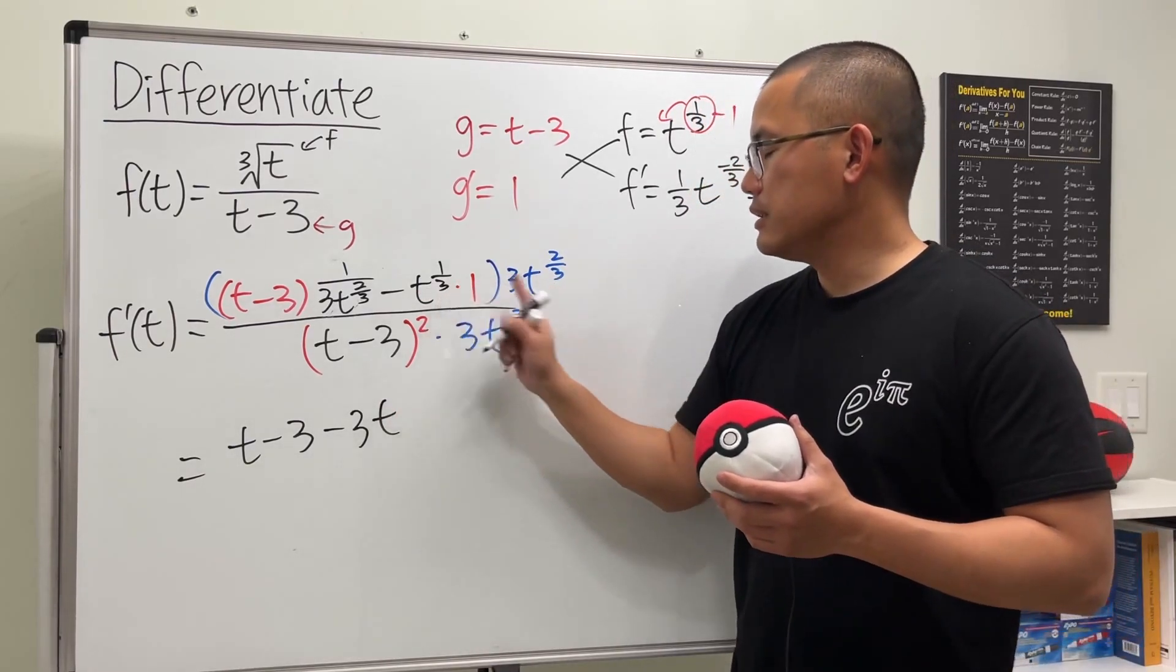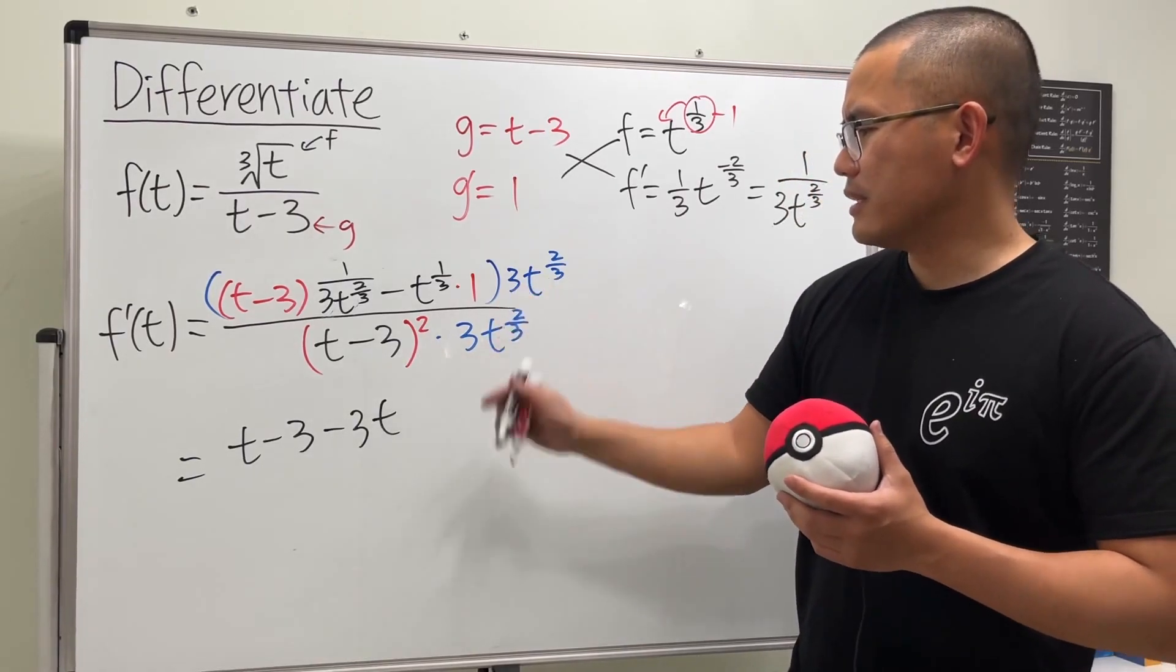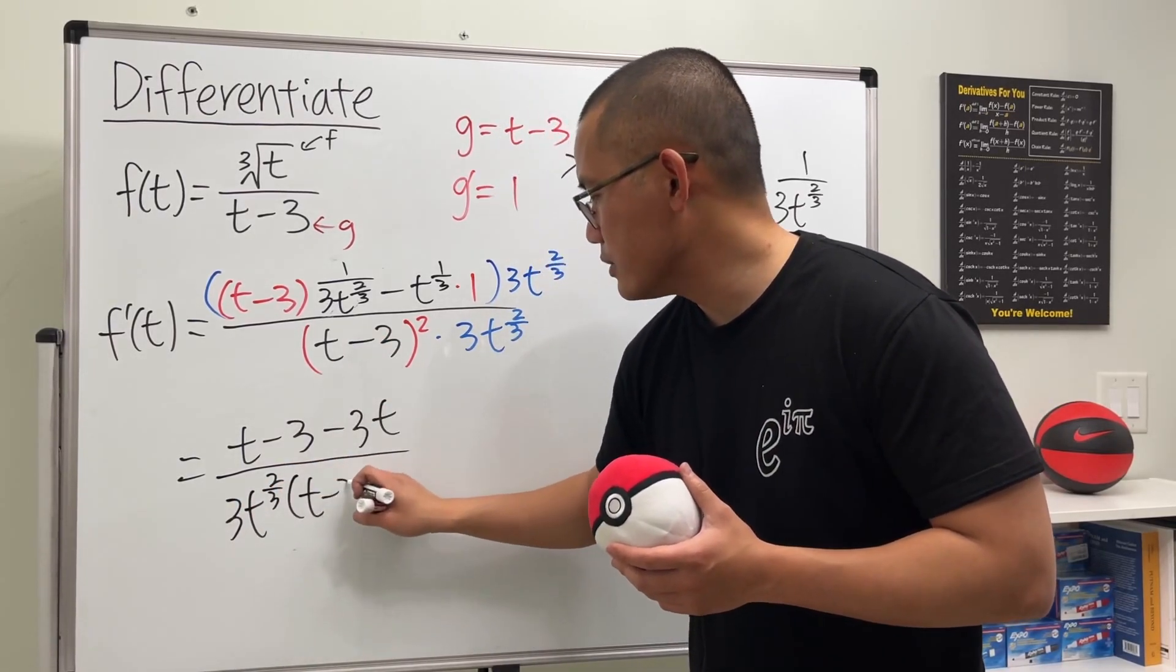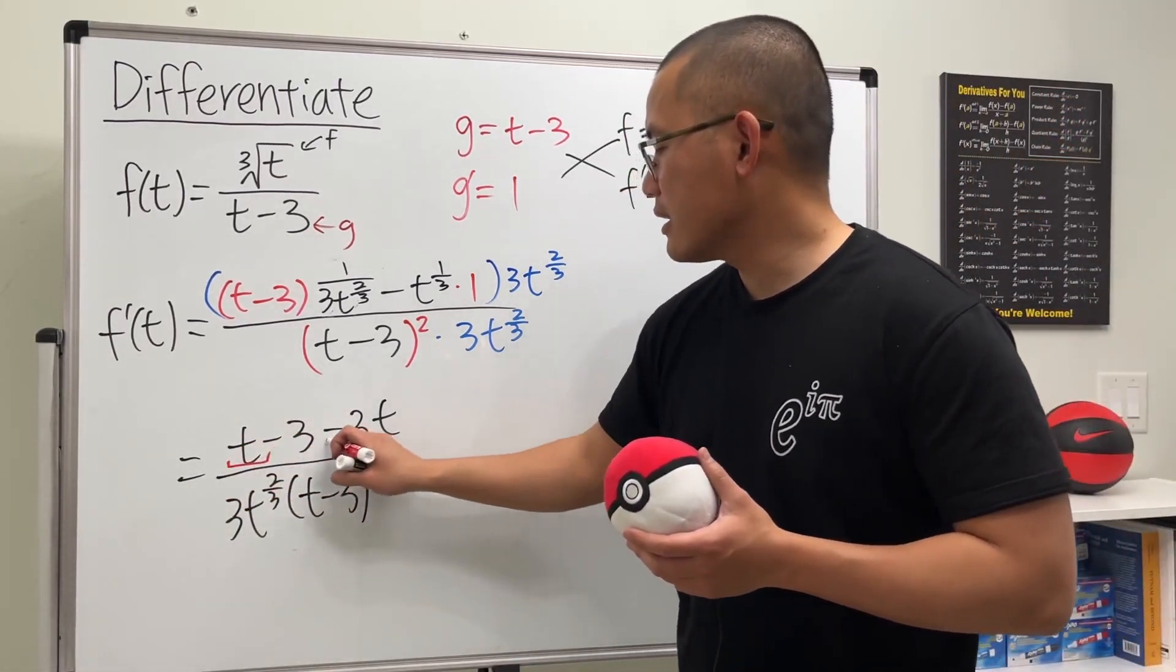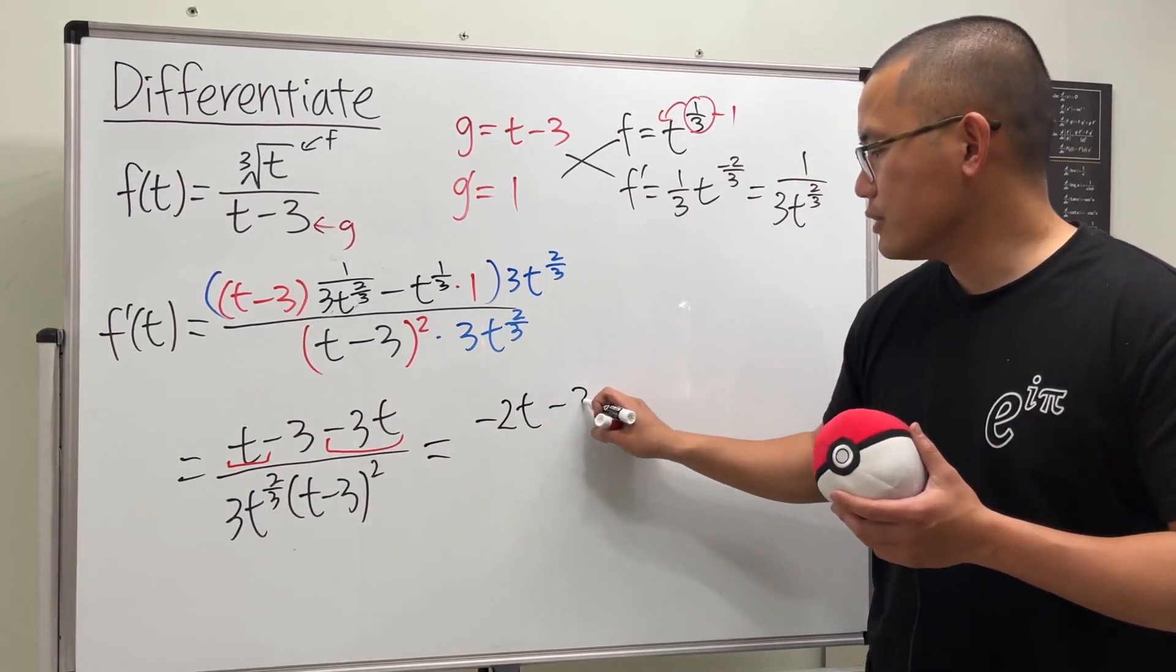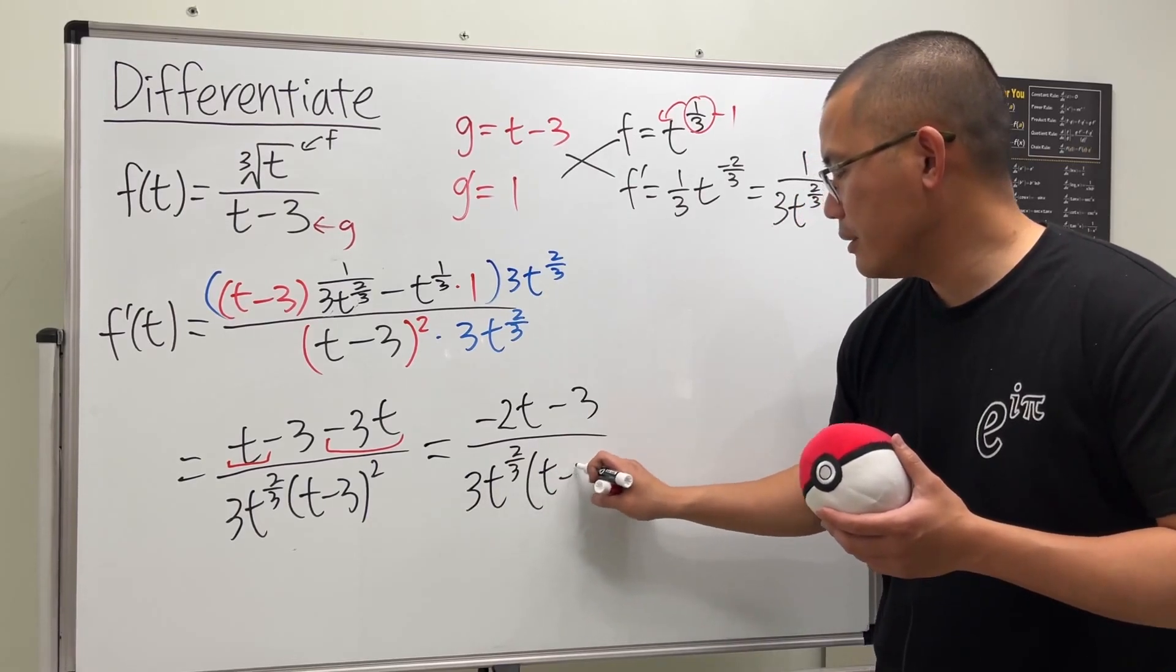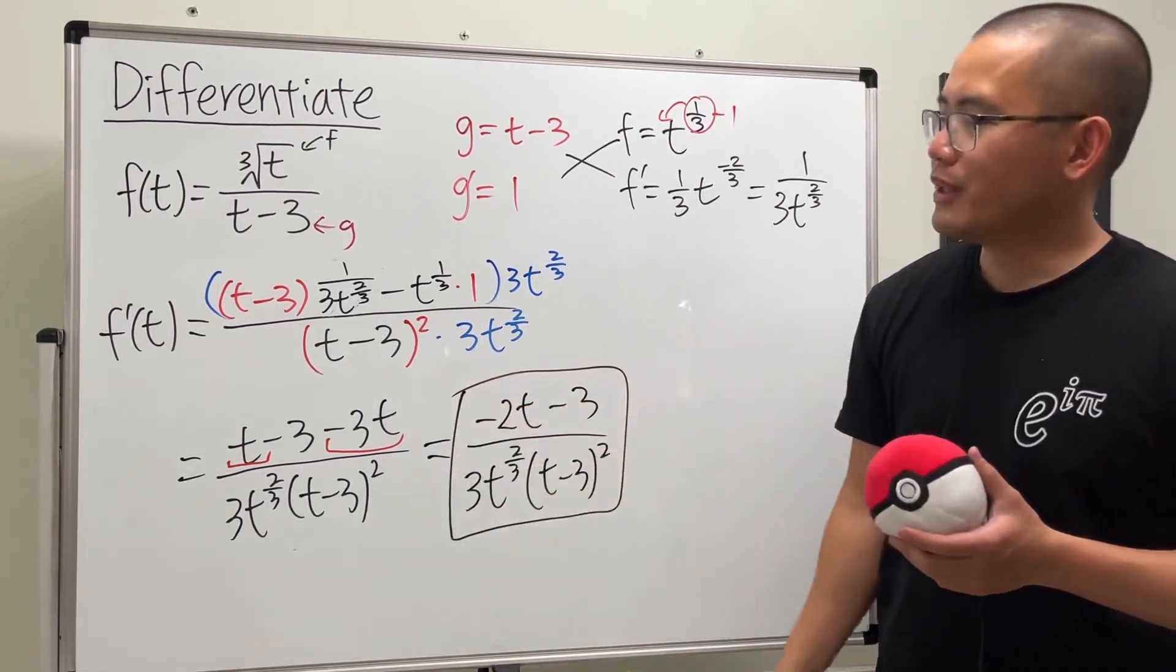And on the bottom, we'll just keep it as it is. Perhaps I'll write down this part first: three t to the two-thirds power times t minus 3 to the second power. And of course we see that this and that can be combined, so we will. Altogether we get negative two t minus 3 over three t to the two-thirds power times t minus 3 squared. And ladies and gentlemen, this right here is it.